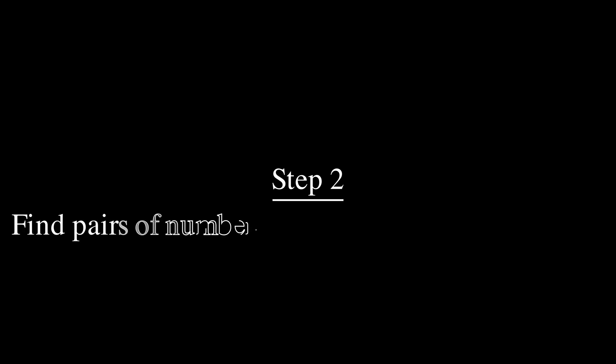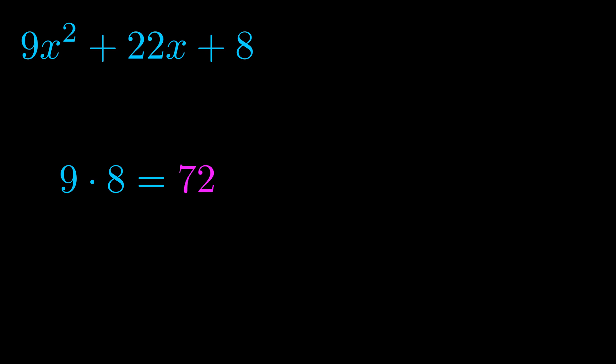Step two is to try to find all of the pairs which multiply to this number. Now it turns out you don't really need to find all of them, but go ahead and write down as many numbers as you can that multiply to the magenta value for now. Pause the video and resume when you're ready to continue. Okay, here's what I came up with.